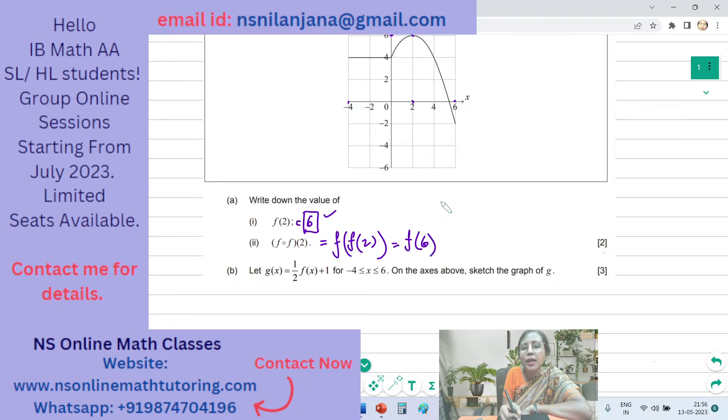That means X is equal to 6. When X is equal to 6, what is the corresponding Y value on the graph? It is negative 2. So F of 6 is negative 2, so the answer is negative 2.